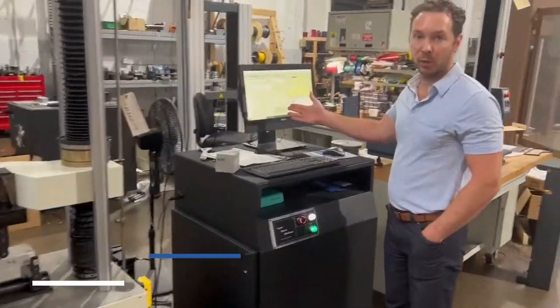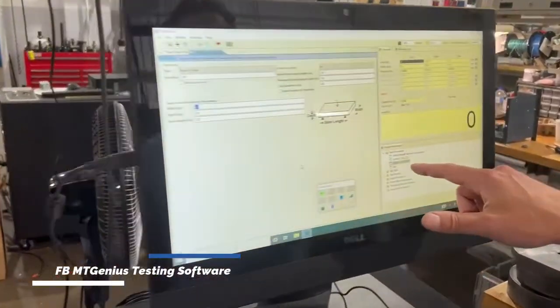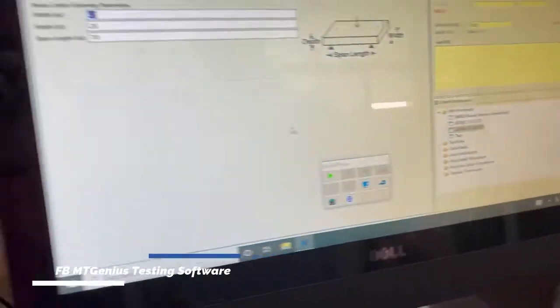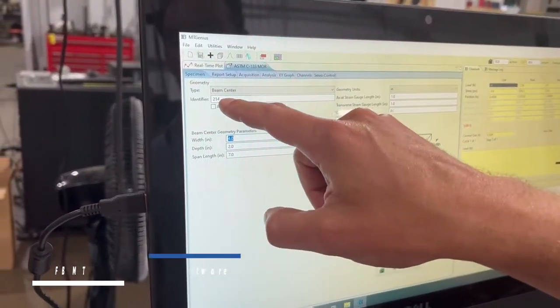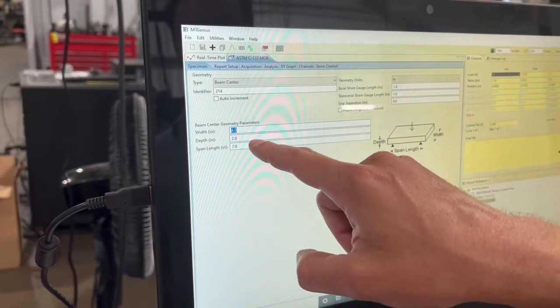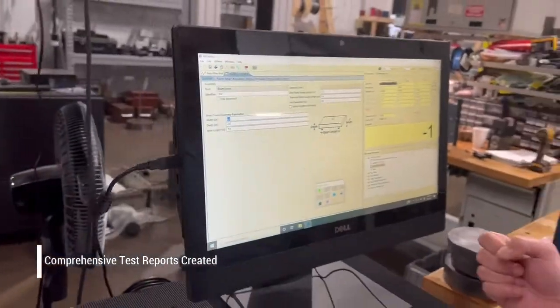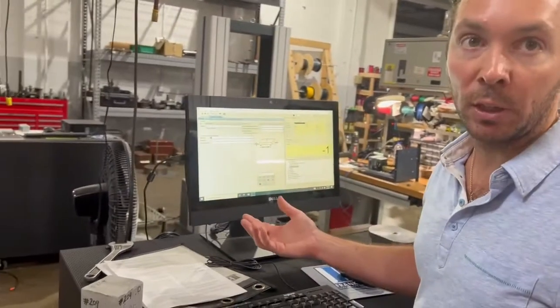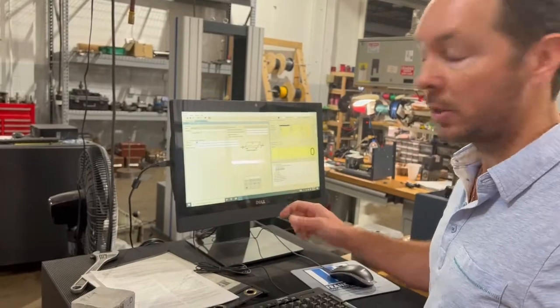I got the MT Genius software already pre-set up for the ASTM C133 MOR testing. This is a three-point bend test. It's a beam center. This is our specimen ID. We got a specimen width of four inches, a depth of two inches, and a span length of seven. It's going to use that geometry and span length to calculate the modulus of rupture, which is a stress value given at the end of the test. And it's going to give you a full graphical test report. Let me show you how it's done.